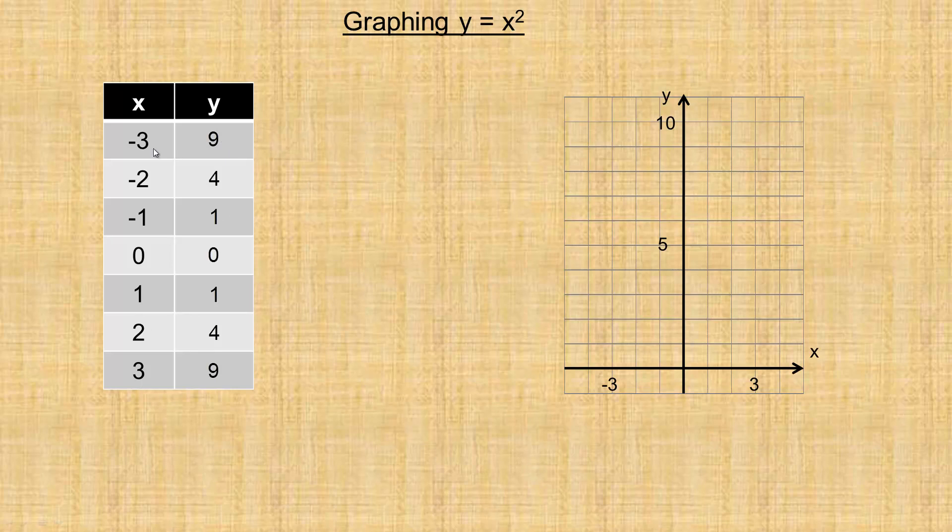So let's get rid of these. This means the point negative 3 comma 9. That's the ordered pair we're going to plot in a moment. This would be negative 2, 4, negative 1, 1, 0, 0, and then 1, 1, 2, 4, and 3, 9 at the bottom.